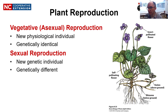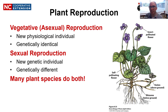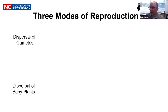Over time, the stems can be naturally severed, or as gardeners or horticulturalists you can intentionally sever those, and suddenly you have two separate physiologically distinct individuals that are genetically identical. Sexual reproduction, just like with all other organisms, has evolved because it enables offspring to be genetically distinct from their parents. The more diverse offspring are, the more potential that population has of adapting to differing and changing environmental conditions. Many plants can do both, but the focus today will be on sexual reproduction.